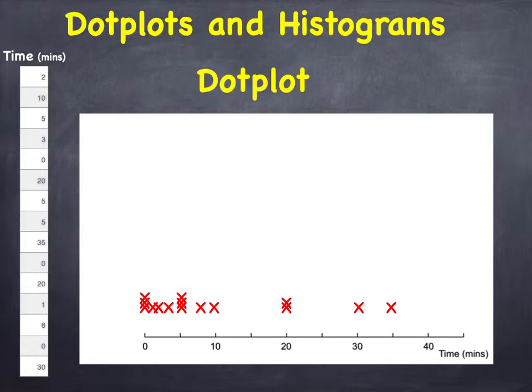A dot plot is a very simple way of picturing data that shows visually where they lie. It helps you to see broad features such as where the bulk of the values lie. In this case that's clearly between 0 and 10 minutes. So we can deduce that many of these children live very close to their school.